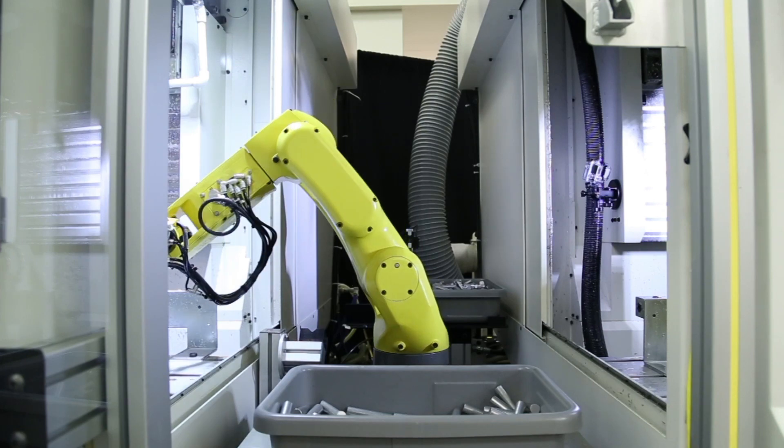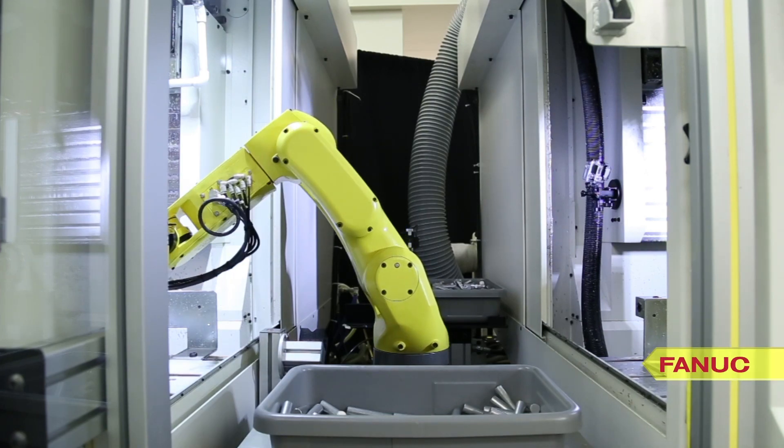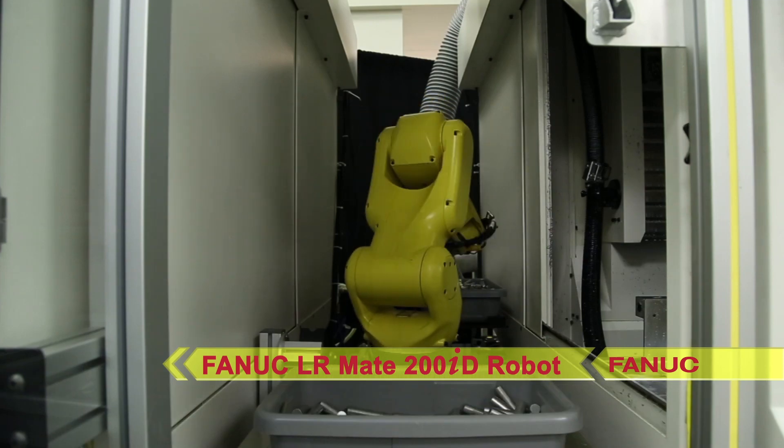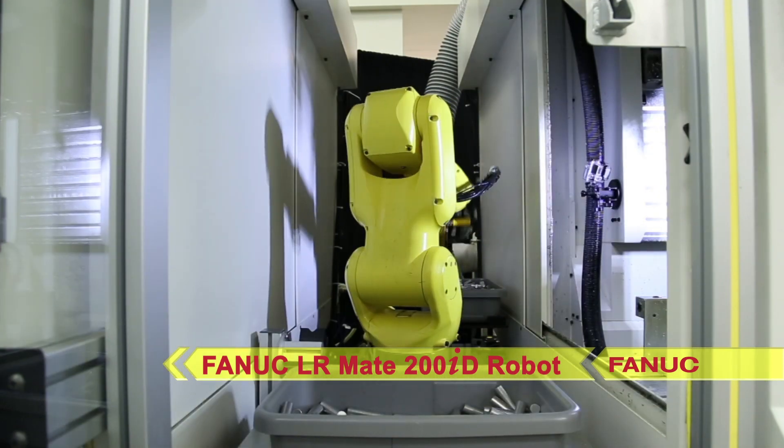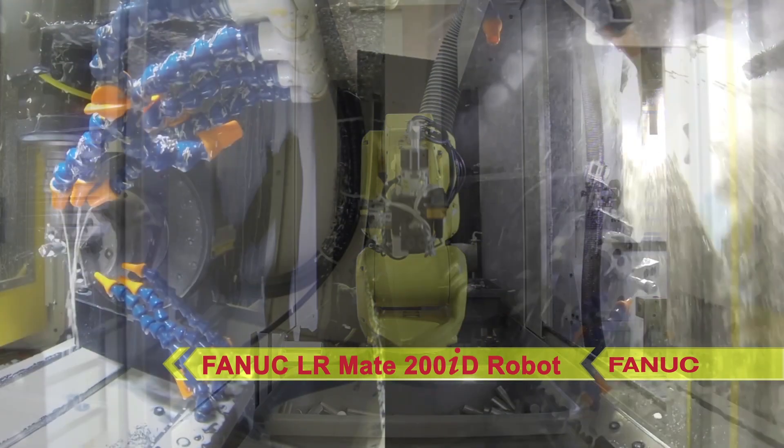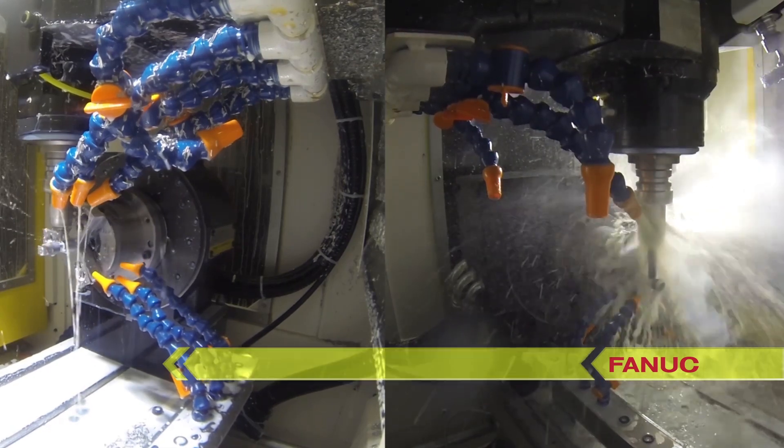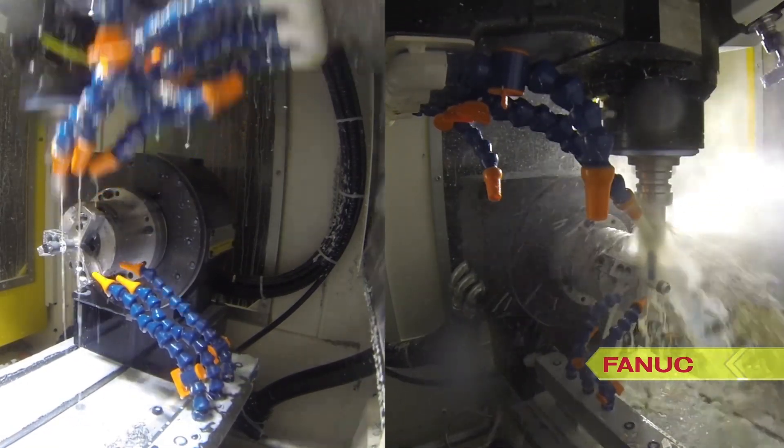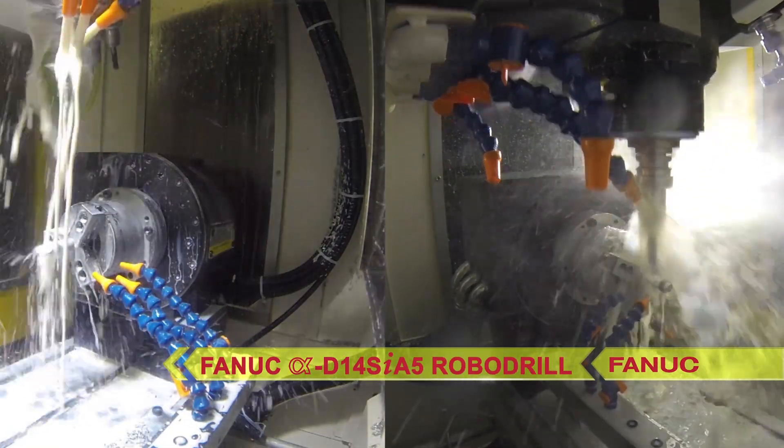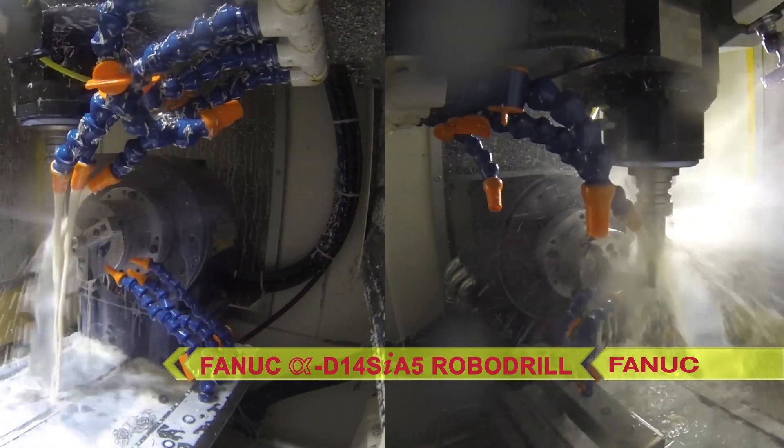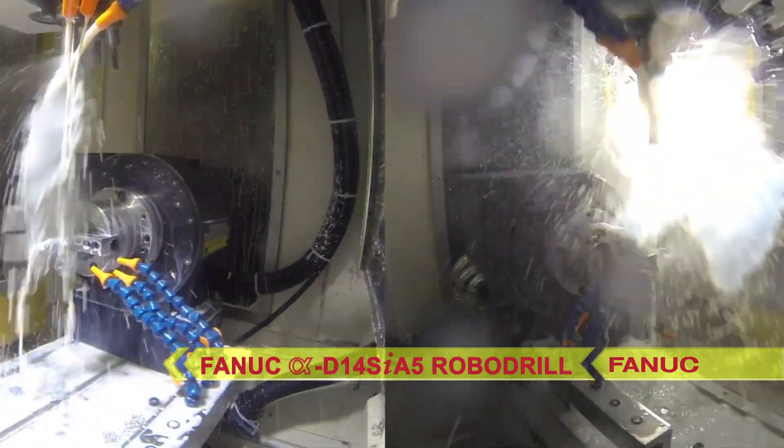The system seen here combines robotics with machining as FANUC America's compact yet versatile LRMate 200ID robot automatically loads and unloads two high-precision FANUC RoboDrill small machining centers to provide the highest level of efficiency and quality of parts.